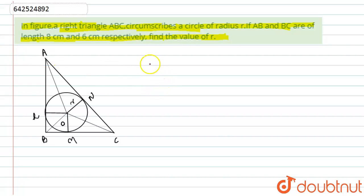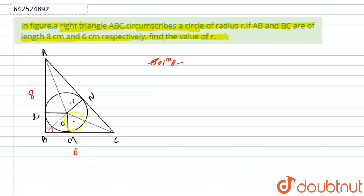So first of all, we have the figure of triangle ABC, which is a right angle triangle. The length of AB is given as 8 centimeters and the length of BC is given as 6 centimeters. We are asked to find the radius of the inscribed circle.